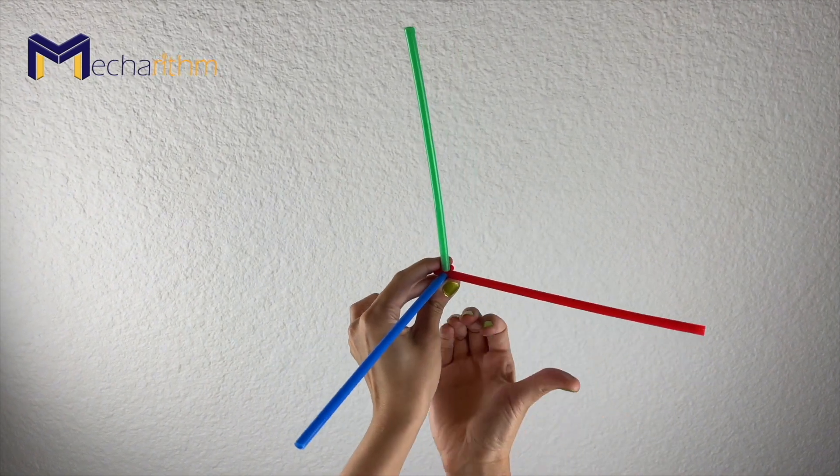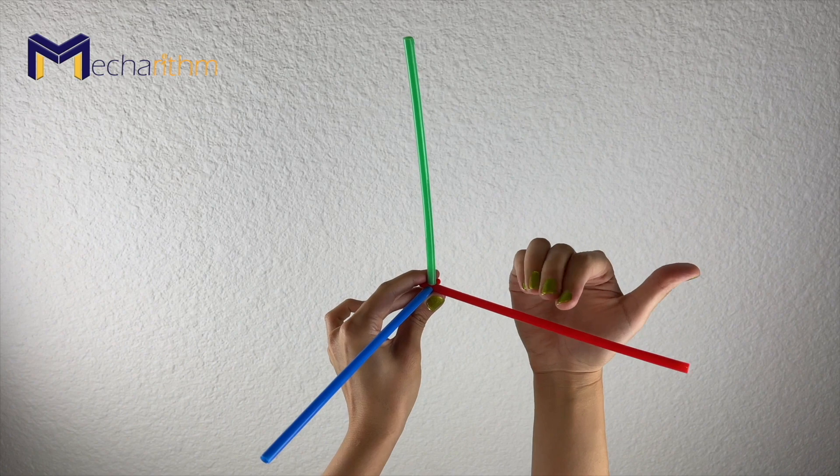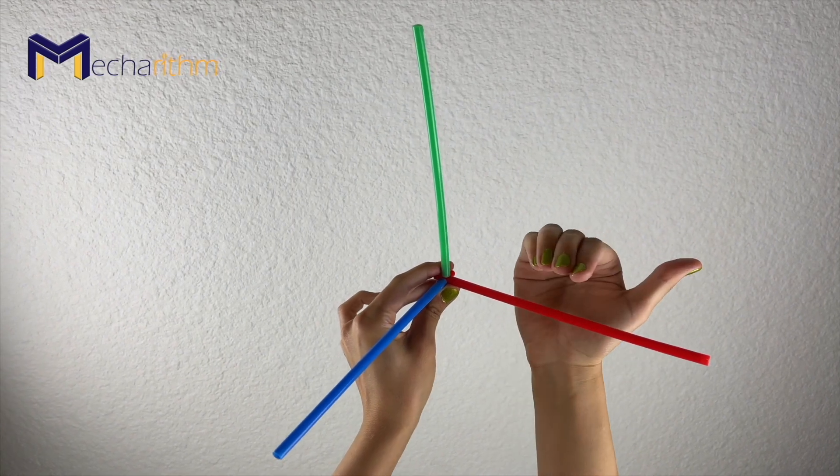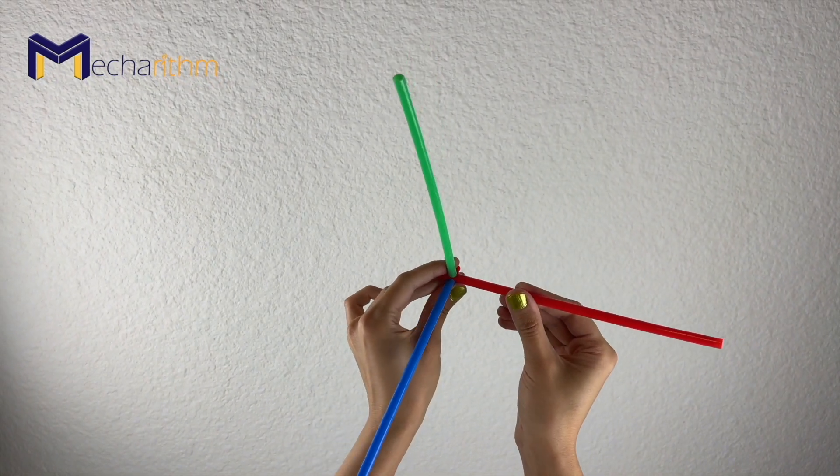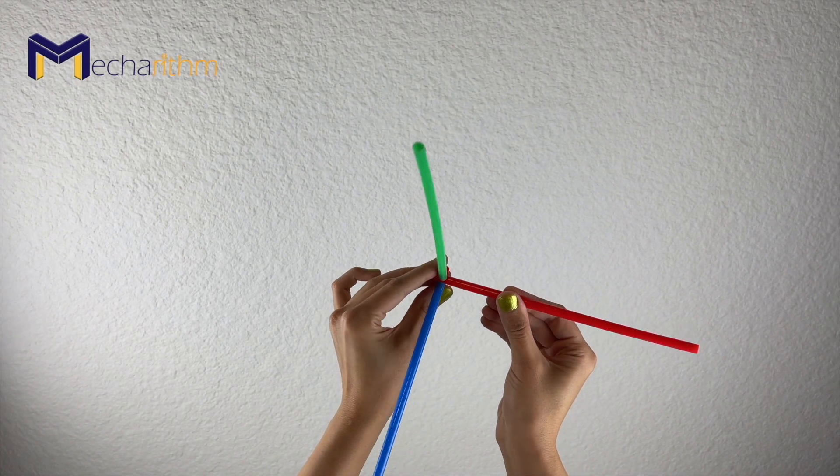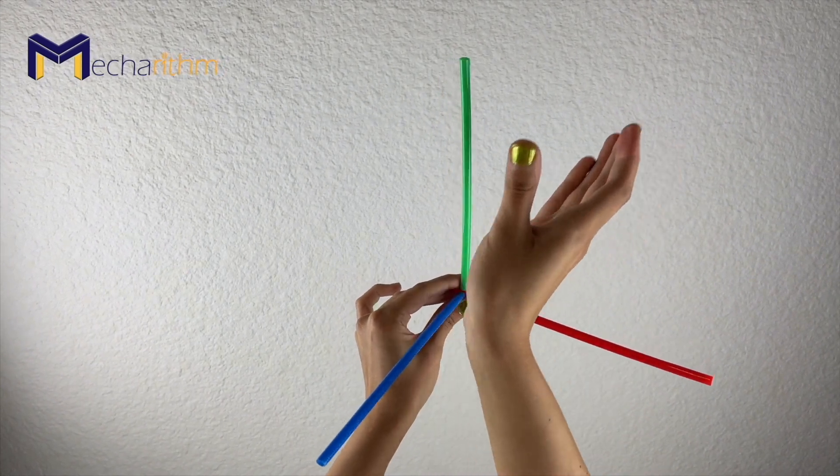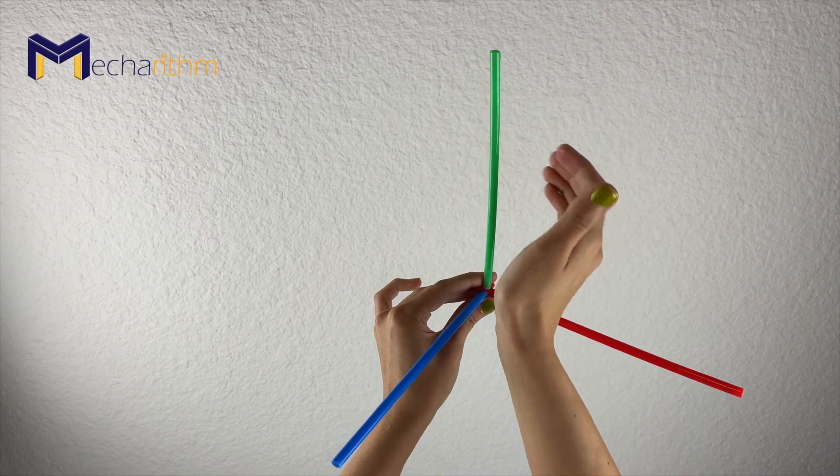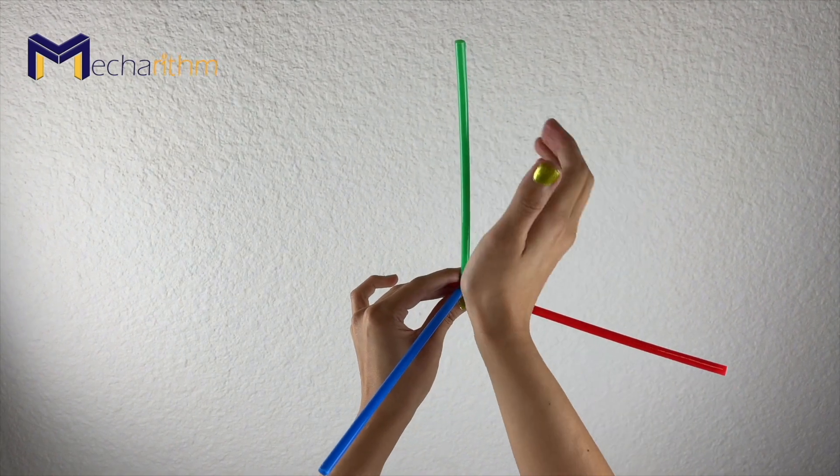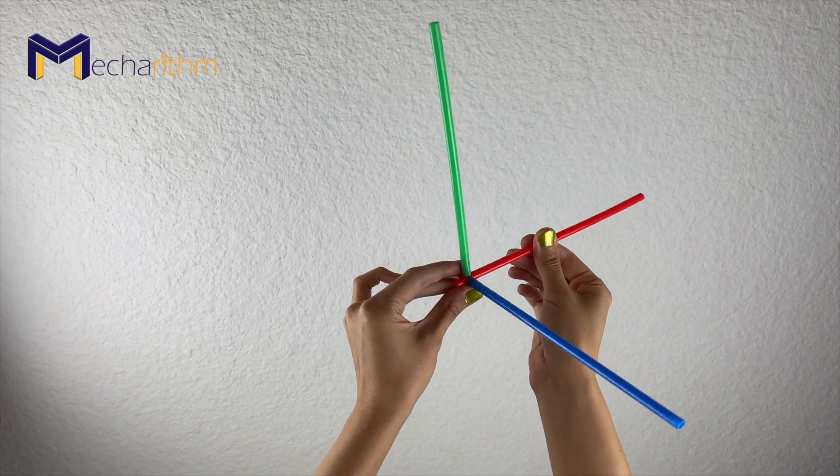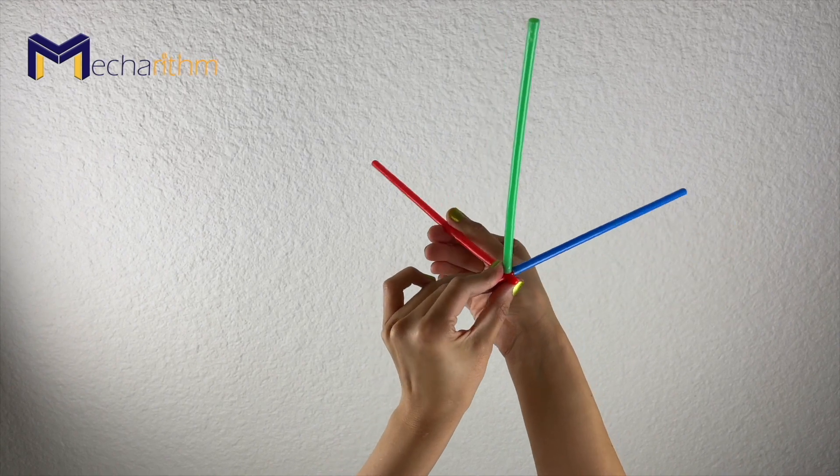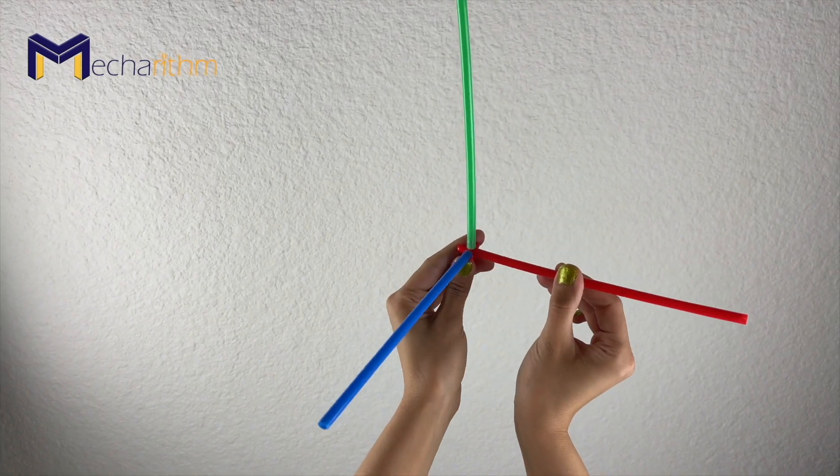The positive rotation around the y-axis would be in this direction. And the positive rotation around the z-axis is in this direction. So this shows the positive rotation around the z-axis.